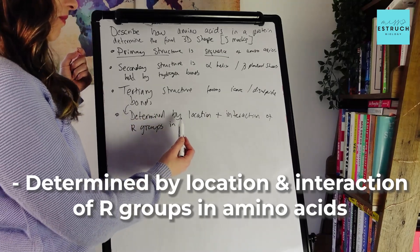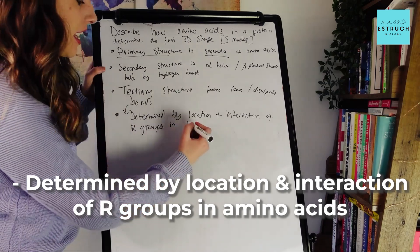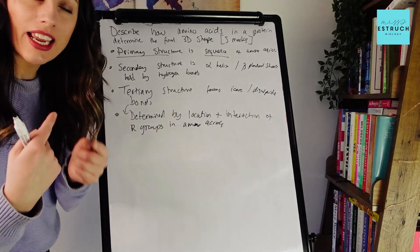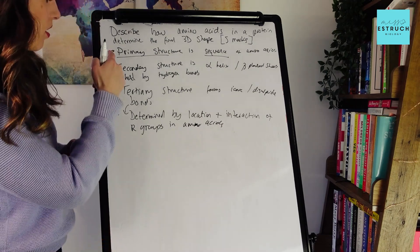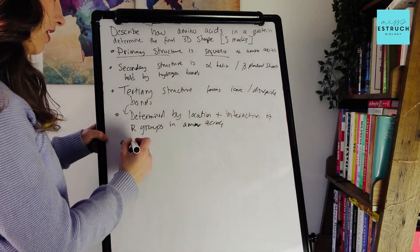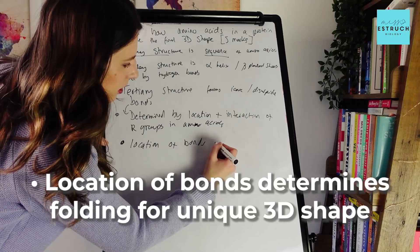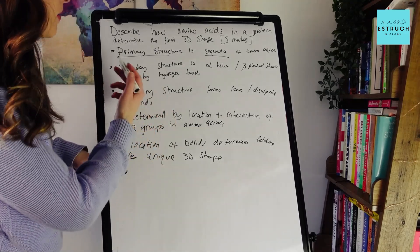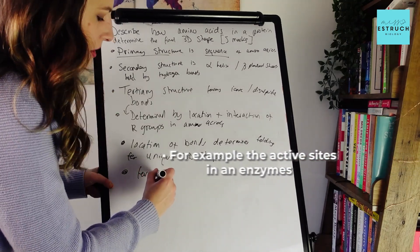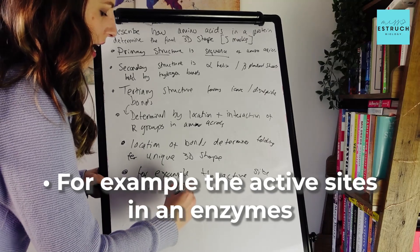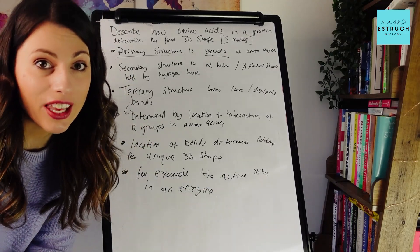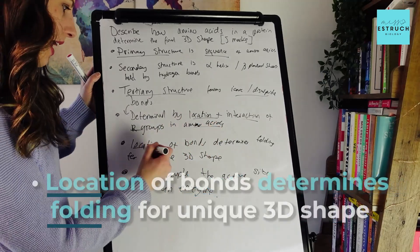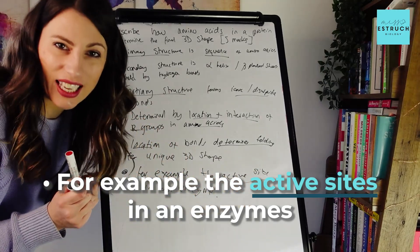The tertiary structure is determined by the location and interactions of R groups of amino acids — meaning it depends on the location of those R groups in the sequence, and it's those R groups that interact to form ionic and disulfide bonds. Then: location of bonds determines the folding for that unique 3D shape. As a bonus point — because it's talking about proteins and unique 3D shapes — let's mention active sites, for example the active site in an enzyme. The key things to underline are: tertiary structure and the bonds, location and interaction of R groups, location determines folding, and active site.